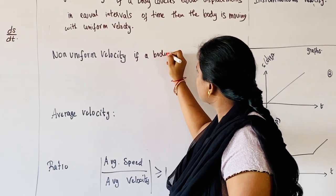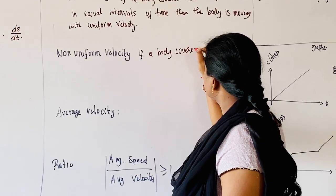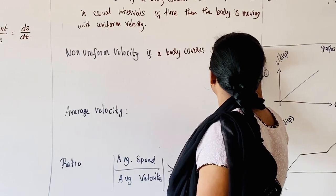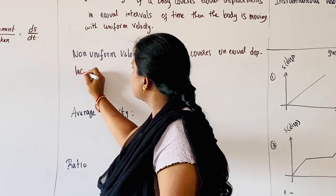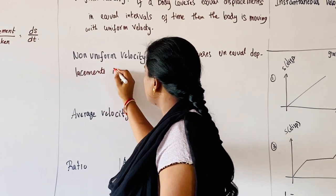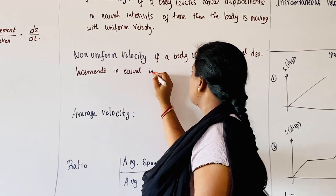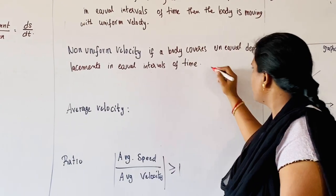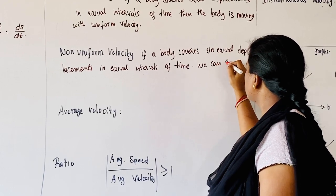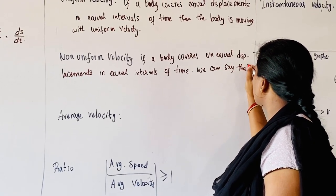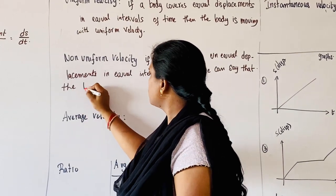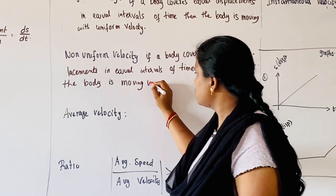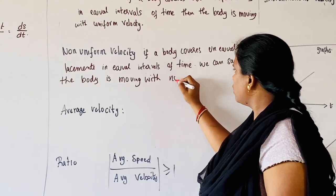If a body covers unequal displacements in equal intervals of time, we can say that the body is moving with non-uniform velocity.